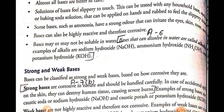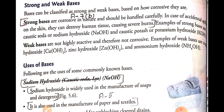Now we will learn the types of bases. There are generally two types of bases: strong bases and weak bases. We classify bases on the basis of how corrosive they are. The bases which are highly corrosive are called strong bases.